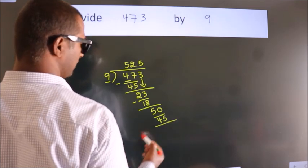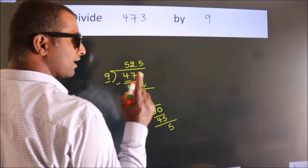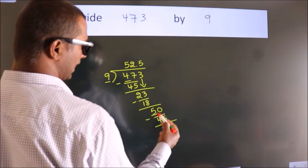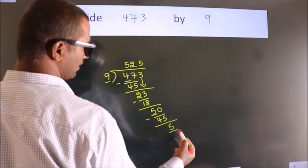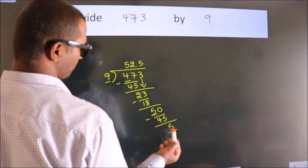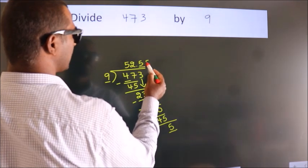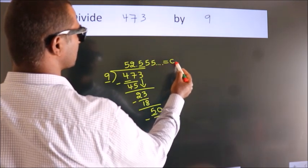Now we subtract, we get 5. Now you observe, here we had 5 and we got 5 again. That means this number keeps on repeating. So this is our quotient.